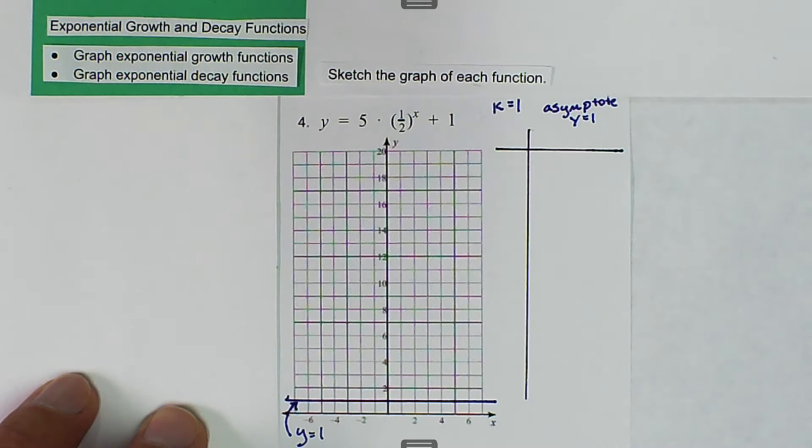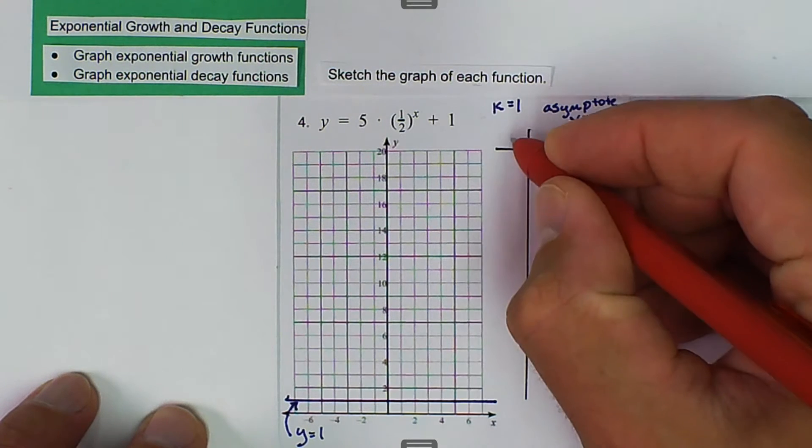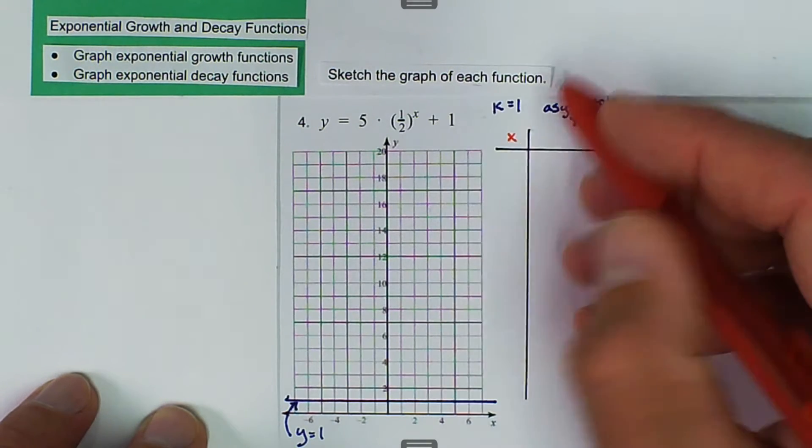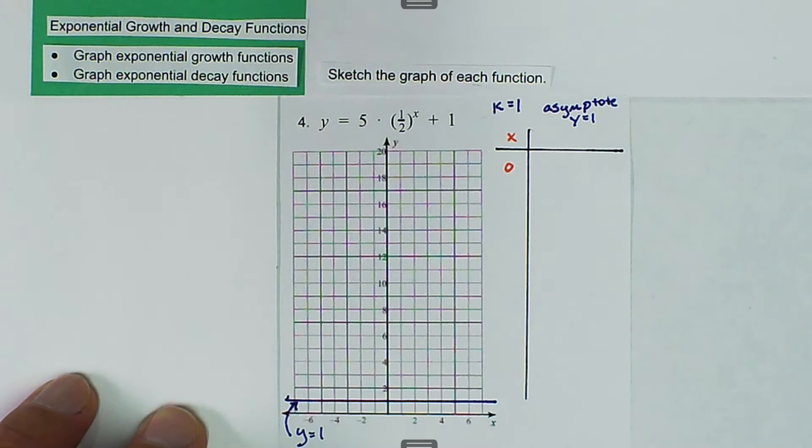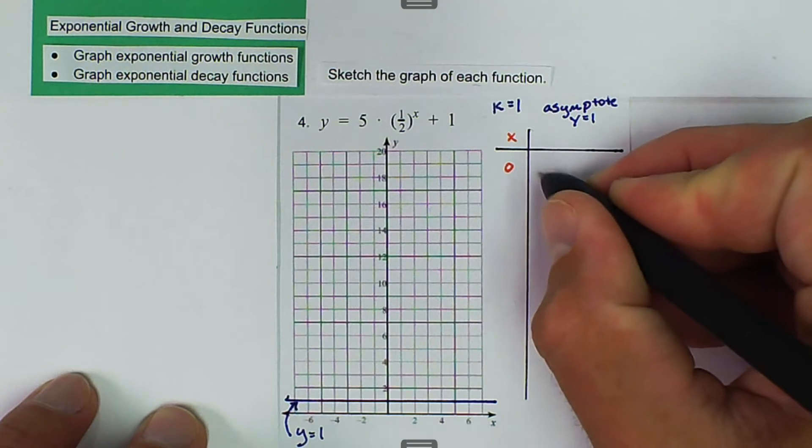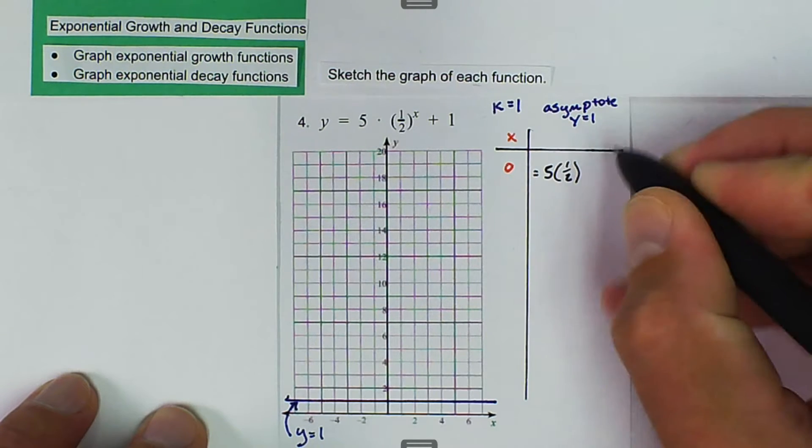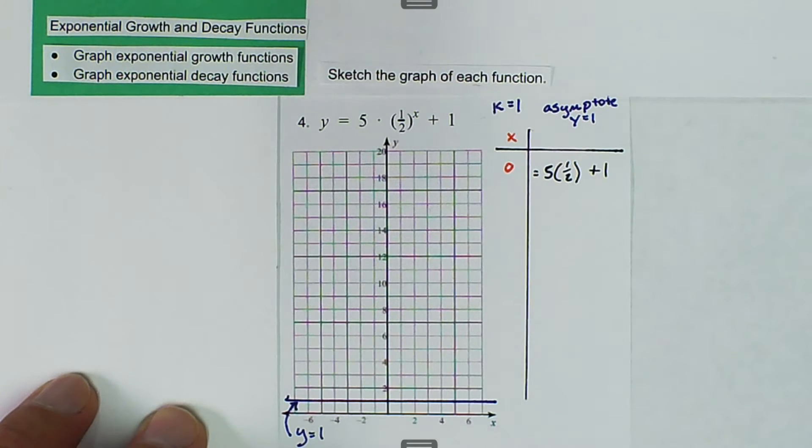And then from there, we just want to pick some points that are going to help us identify what the graph is doing. A good one to pick always to start with is 0. Make the exponent 0. In this case, there's nothing added to it, so if we substitute in 0, then we get 5 times 1 half raised to the 0 power plus 1.